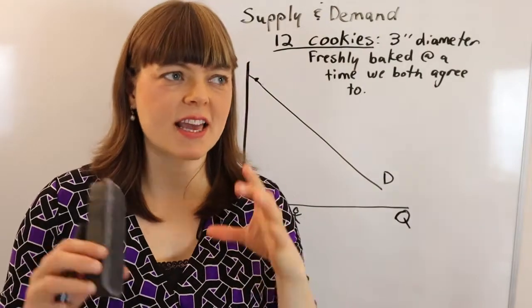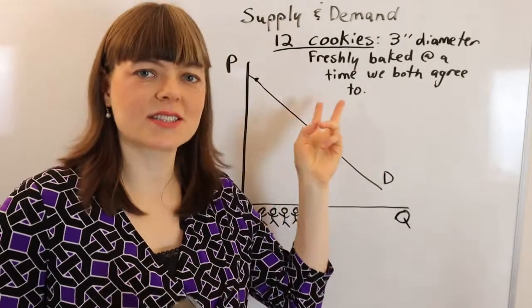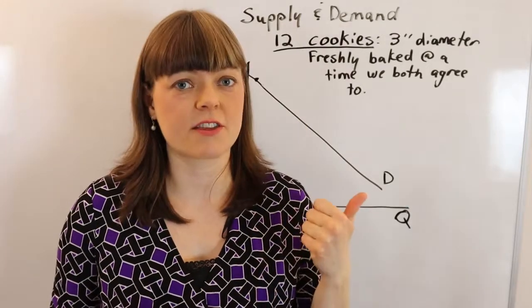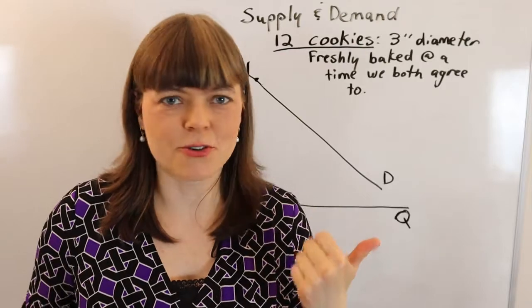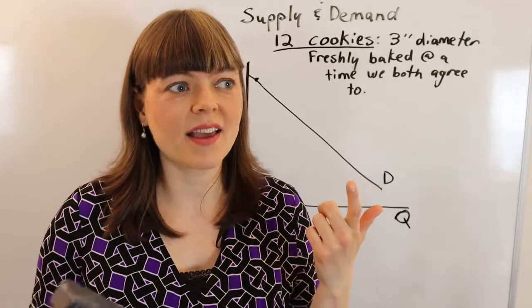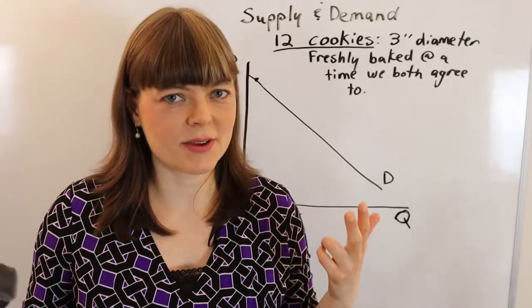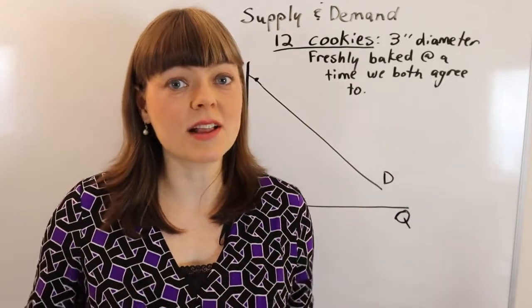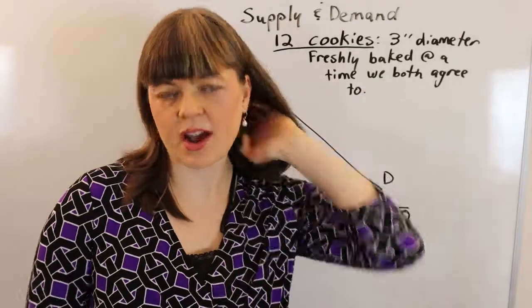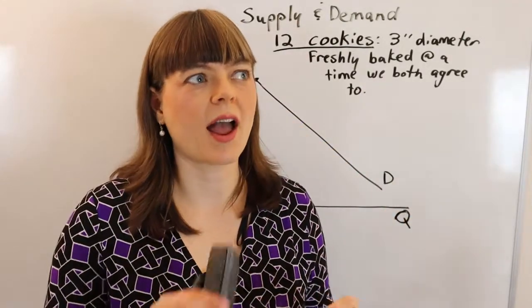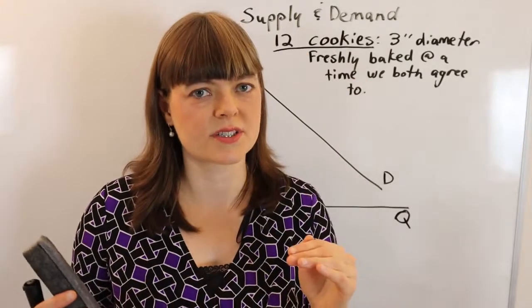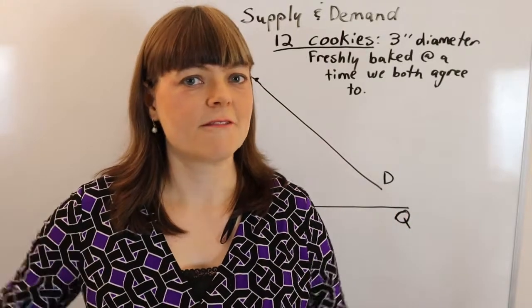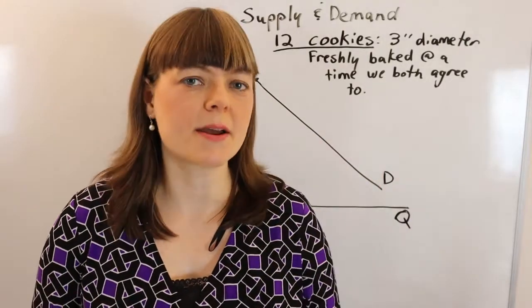The real trick is getting students to think about the lowest amount they'd be willing to supply the cookies for. They have to think through what ingredients are needed, what they'd have to buy, the time investment, and how much they enjoy baking. All of that is relevant when thinking about a supply curve. They write on the back of their note card how they came up with the number — probably somewhere between $5 and $100.